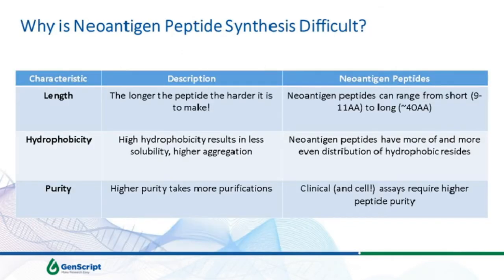Peptides are required for all these different stages and are a critical component. But synthesizing neoantigen peptides is not a trivial task, as has been well reported in the literature. Due to various physiochemical properties, the top three culprits are length, hydrophobicity, and purity. The longer a peptide is, the more difficult it is to synthesize. Neoantigen peptides can range from 9 to 11-mers all the way up to 40-mers if you're thinking about a peptide-based personalized cancer vaccine.